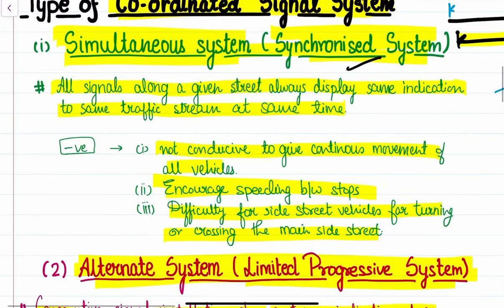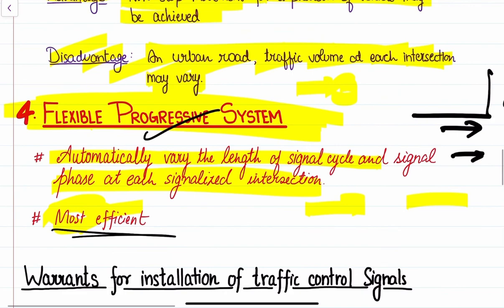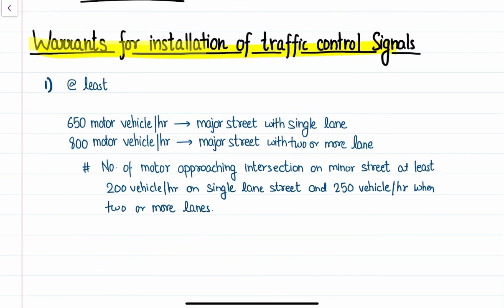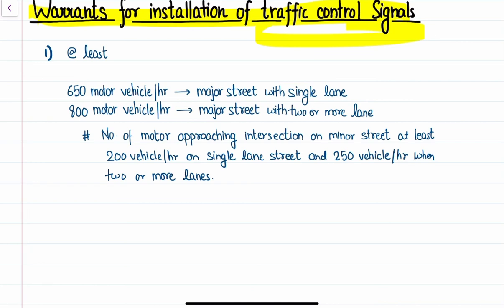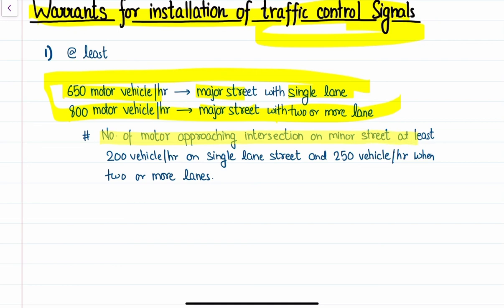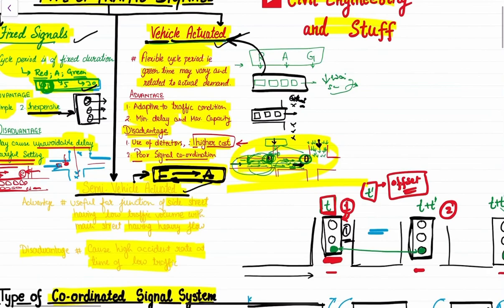These are the different types of traffic coordination systems: simultaneous, alternative, simply progressive, and flexible progressive. Regarding warrants for installation, traffic control signals will be installed on major single-lane streets when there are 650 motor vehicles per hour, and on major streets with two or more lanes when traffic volume exceeds 800 motor vehicles per hour. On minor streets, at least 200 vehicles on a single lane and 250 vehicles on two or more lanes warrant the installation of traffic signals.